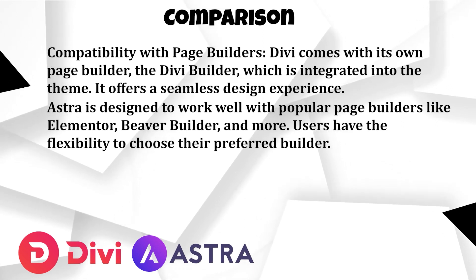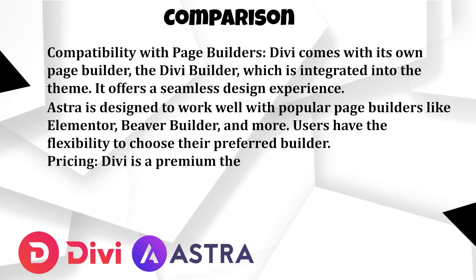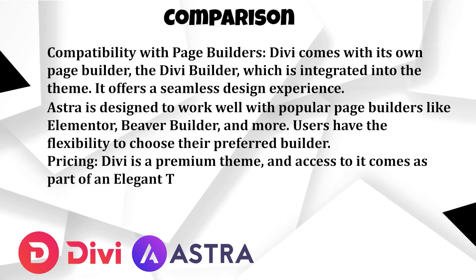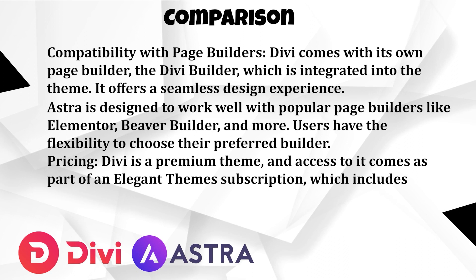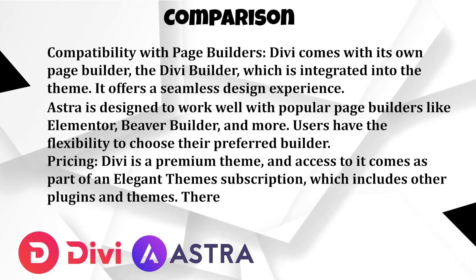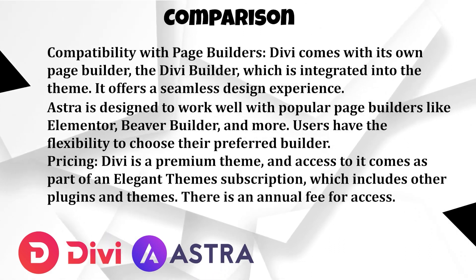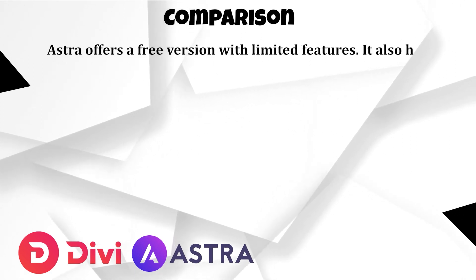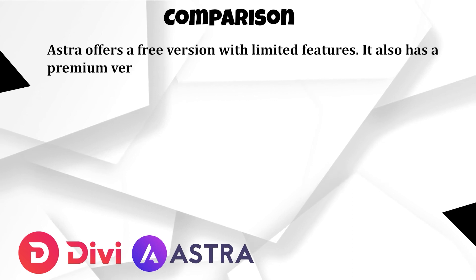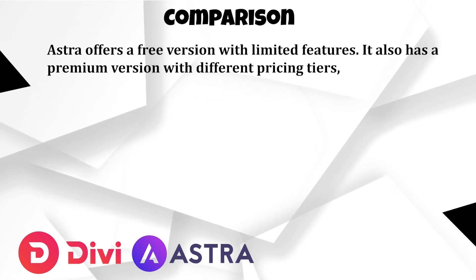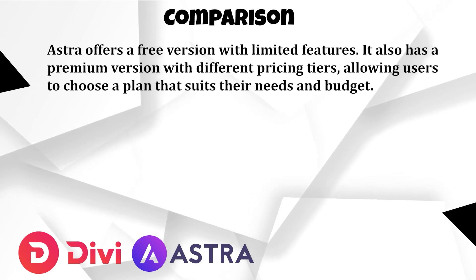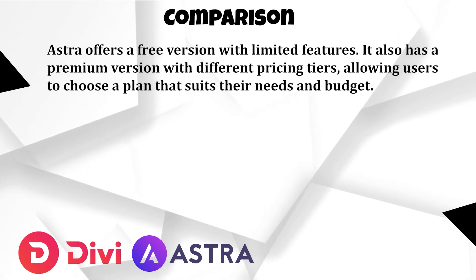Some important things are the pricing. Divi is a premium theme and access to it comes as part of the Elegant Themes subscription, which includes other plugins and themes, with an annual fee for access. Astra offers a free version with limited features and also has a premium version with different pricing tiers, allowing users to choose a plan that suits their needs and budget.